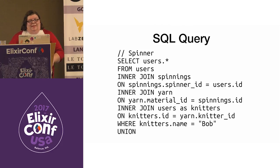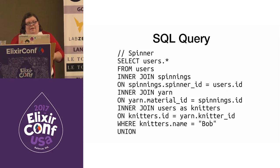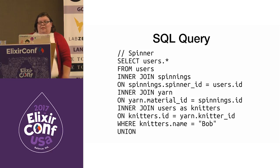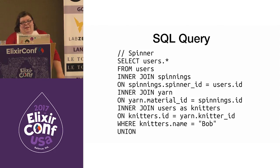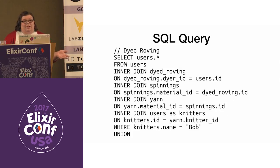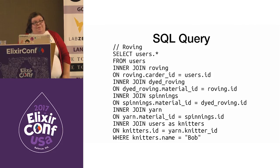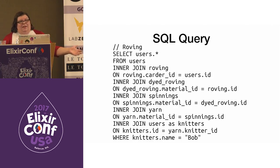If we're going to do a SQL query for this, it's going to get bad. We need to work backwards from the yarn. The SQL query will query who spun the yarn and who knitted it — here we named them Bob. We select all the knitters from users, inner join the spinning from the IDs that match, inner join the yarn — inner joins everywhere. Again with the dyed roving and the roving, the same thing — all those joins. This is a pretty easy process, but imagine a large distribution with multiple processes; it can get really ugly really fast.